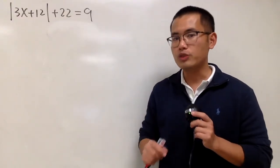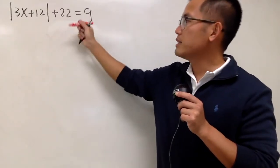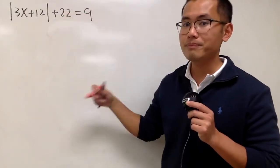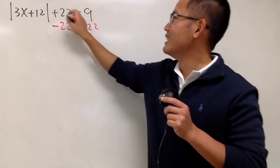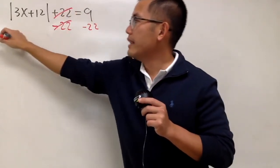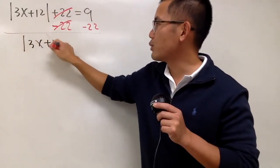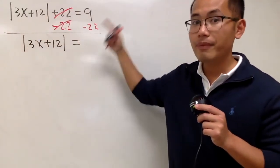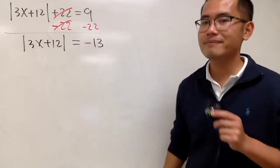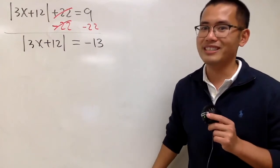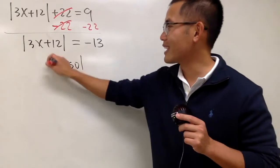To solve this absolute value equation, we will have to first isolate the absolute value. We need to get rid of the positive 22, so we will minus 22 on both sides. This and that will be cancelled, and we have absolute value of 3x plus 12 equal to 9 minus 22, which is negative 13. No solution — you are done.